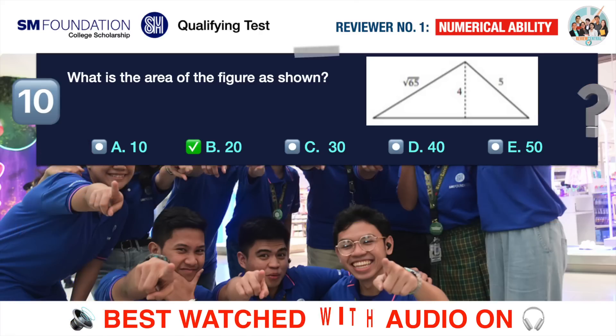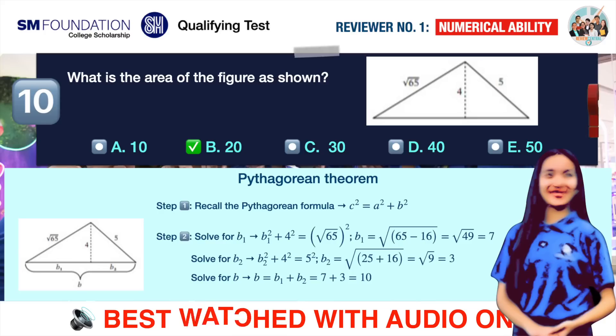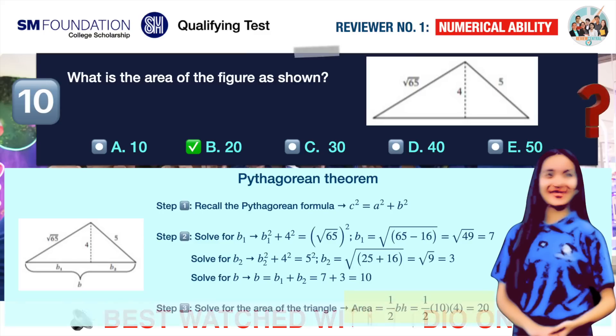The correct answer is B. 20 square units. Let's recall our Pythagorean formula and use it to find the length of the base. C squared equals A squared plus B squared, where C is the hypotenuse of a right triangle, and A and B are its two other sides or legs. Remember that the Pythagorean formula works only with right triangles, so we'll have to split the given triangle into two, as shown. We should arrive at the values of B_1 and B_2 as 7 and 3, respectively. Therefore, B equals 10. Finally, with both the height and the base of the triangle already known, we can now solve for its area. We should quickly arrive at 20 square units as our correct answer.